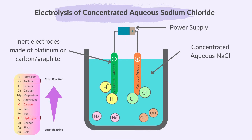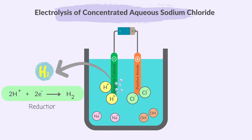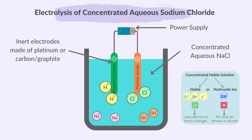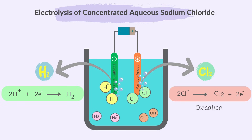At the cathode, the negative electrode, H+ will be discharged since it's less reactive than sodium ions. So H+ ions move to the cathode, gain electrons, and form hydrogen gas. At the anode, the positive electrode, chloride ions are discharged — they lose electrons and produce chlorine gas. Na+ and OH- ions remain and combine to form NaOH solution.